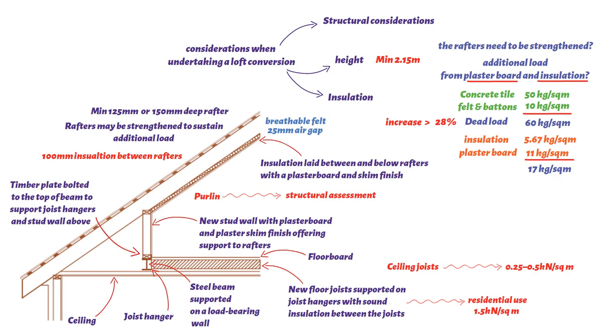Consequently, it is normal practice to install new beams spanning between the new steel beams, which support the purlin. A modern truss roof is more difficult to convert, and expert advice should be obtained prior to undertaking any alterations to such a structure.